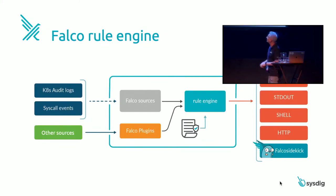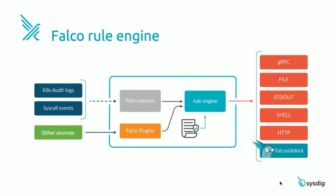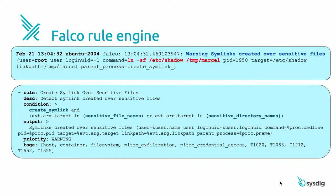Here is a more detailed structure of how Falco functions. Syscall events go into the Falco rule engine. The rule engine determines what's happening in the system — are these syscalls relevant? — and spawns an alert via gRPC, file, standard out, syslog, or HTTP. How does a rule look? Here's an example: a warning — symlink created with a sensitive file. The command is 'ln -sf /etc/shadow /tmp/marcel,' so I'm copying a symbolic link of the shadow file.